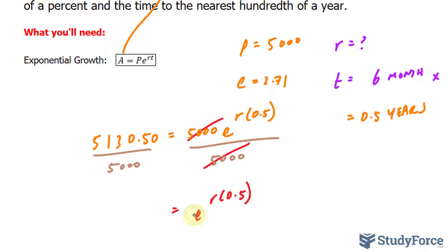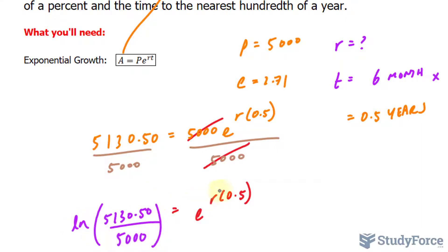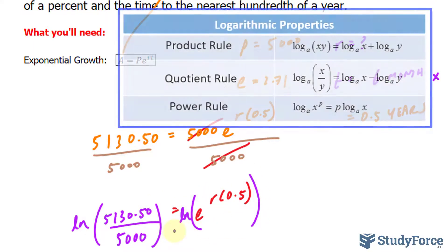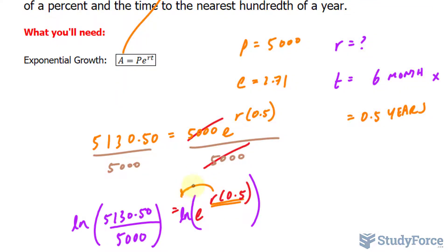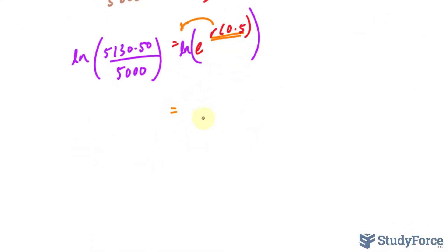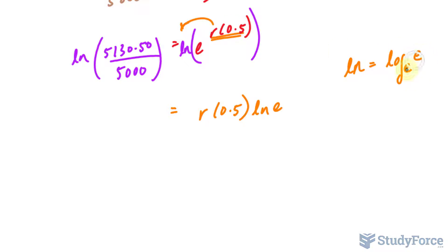To get R on the same level as E so that it's no longer an exponent, we take the ln of both sides. Remember, ln is log of base E — we just use ln to represent that. On the right side, using the rules of logarithms, when you take the ln of a number raised to a power, the exponent becomes a product. So we can write it as R times 0.5 times ln(E). Since ln is log base E, log base E of E equals 1, so that cancels out.